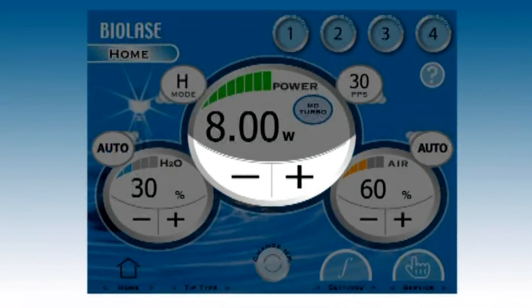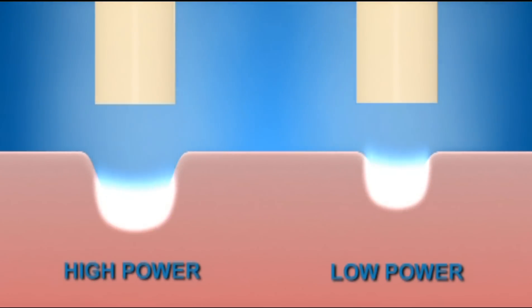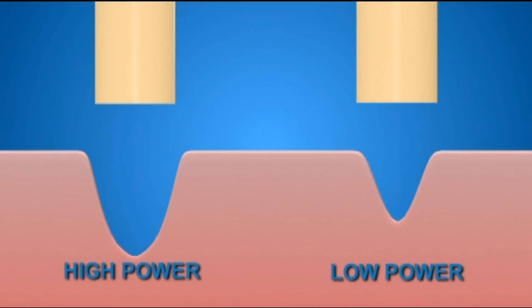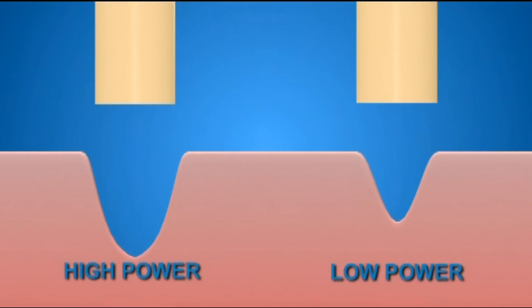Let's start with power. These buttons increase or decrease the amount of laser energy coming from the tip. Higher power makes a deeper, slightly wider cut. Use higher power for more fibrous tissue. As you cut, adjust the power for the results you want.